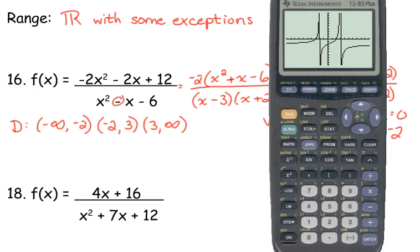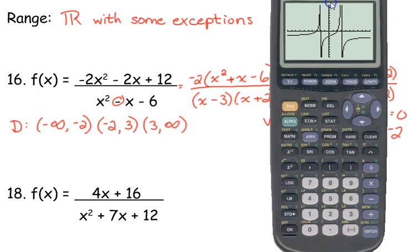Those lines are not actually a part of the graph — those are our vertical asymptotes. We draw those as dashed lines. My calculator graphs them, but some calculators don't — I wish mine wouldn't. You don't need the straight line; the curves are the only part of the graph. When we graph this by hand, we put dashed lines right where those straight lines are, because those are our vertical asymptotes.